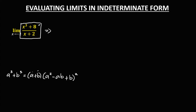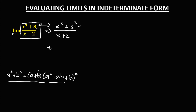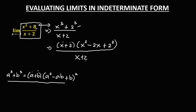We can rewrite the numerator as x cubed plus 8, since 8 equals 2 cubed. Applying the sum of two cubes factoring, we get (x + 2) times (x squared minus 2x plus 2 squared), all over (x + 2). We can then cancel the (x + 2) terms.